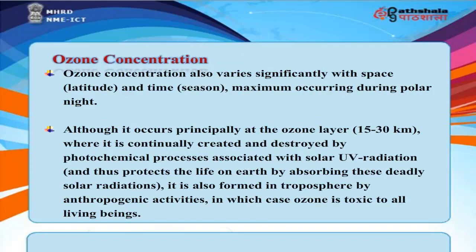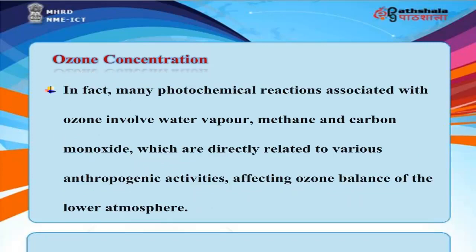Ozone concentration varies significantly with space, latitude, and season — with maximum occurring during polar night. Although ozone principally occurs in the ozone layer at 15 to 30 kilometers, where it is continually created and destroyed by photochemical processes associated with solar UV radiation and protects life on Earth, it is also formed in the troposphere by anthropogenic activities, where it is toxic to all living beings. Many photochemical reactions associated with ozone involve water vapor, methane, and carbon monoxide, which are directly related to anthropogenic activities affecting the ozone balance of the lower atmosphere.